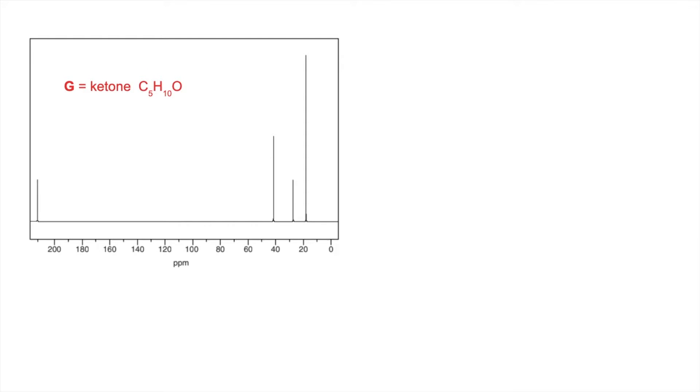So we've just established that G is a ketone, so therefore its molecular formula is going to be C5H10O. There's four carbon environments in this spectrum, there's four peaks, but because it's got five carbons, two of the carbons must be equivalent to each other.